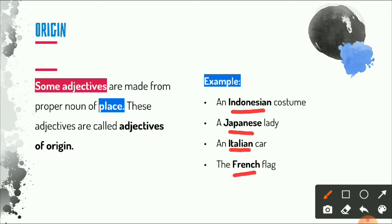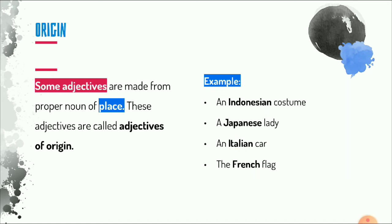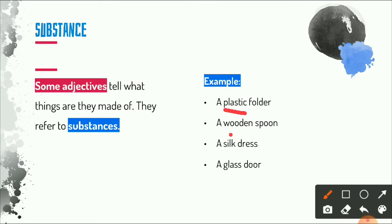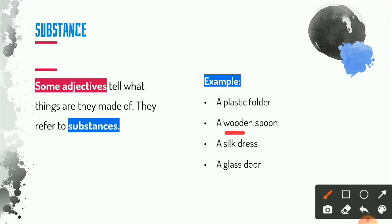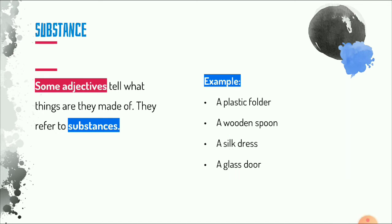Next we have adjectives of substance, which we can also call adjectives of material, because they describe what something is made of. For example: plastic, wooden, silk, and glass. We have a folder made from plastic, a spoon made from wood, a bag made from silk, and a container made from glass.